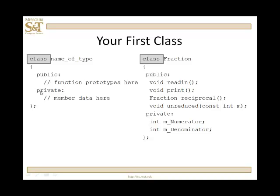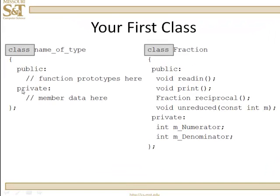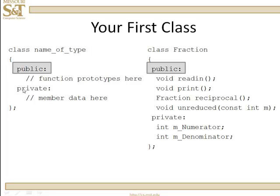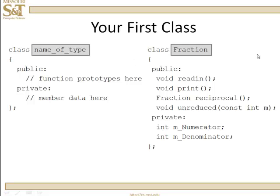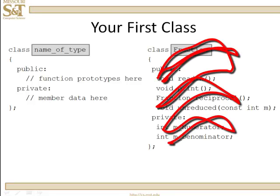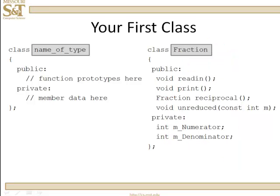Throughout this part of the semester, we're going to work with a particular class as an example: the class for fractions. You cannot declare a fraction in C++ — there is no such type. We're going to build a class of objects named Fraction, so that you can declare fractions and work with them. A caveat: the fraction class I'm building over the next several lessons is not one I'd personally build for production use. The functions I've included here are chosen to demonstrate the principles I'm teaching, not because they represent the ideal fraction class.